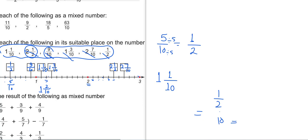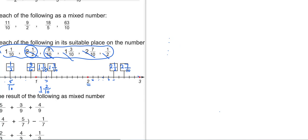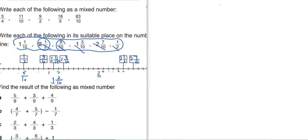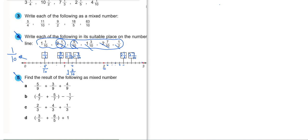Now let's go to Exercise 5: Find the result of the following as a mixed number. Letter A: 5 over 9 plus 3 over 9 plus 4 over 9. We can add fractions with the same denominator — keep the denominator as it is. 5 plus 3 equals 8, then 8 over 9 plus 4 over 9. 8 plus 4 equals 12 over 9.